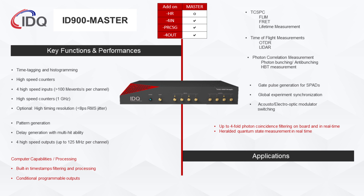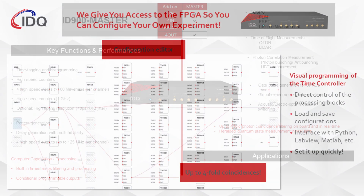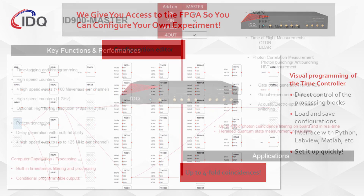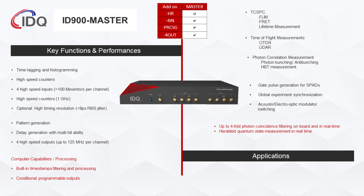The onboard FPGA is the key to avoiding heavy data transfer to your PC. The time controller's computational engine is designed to handle the bulk of the processing load between when a signal is received and when usable data is ultimately transferred to your PC. Conditional filters, start-stop histograms, coincidence extraction, count rate, and other intensive calculations are all handled onboard thanks to the ID900's unique built-in computing power.